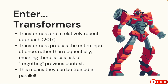This is where transformers come in. Transformers are relatively recent, introduced in a paper in 2017 called 'Attention is All You Need.' What's significant about transformers is that they process the entire input at once rather than sequentially, meaning there's less risk of forgetting previous context. There are still limitations on how large an input a transformer can handle, but it is more flexible than an RNN. And this means they can be trained in parallel, therefore much faster than an RNN.